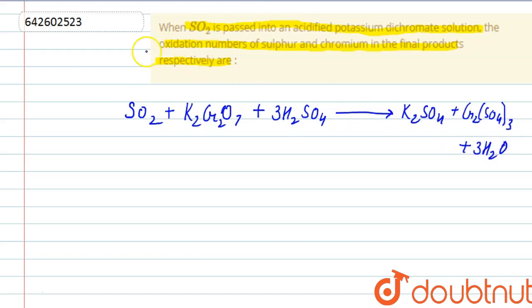This is the balanced reaction for how the reaction takes place between SO2 and K2Cr2O7. Now, in this reaction we are given SO2, oxidation state of sulfur in SO2 is - oxygen has an oxidation state minus 2, it will be x minus 2 into 2 equals 0, it will be plus 4.